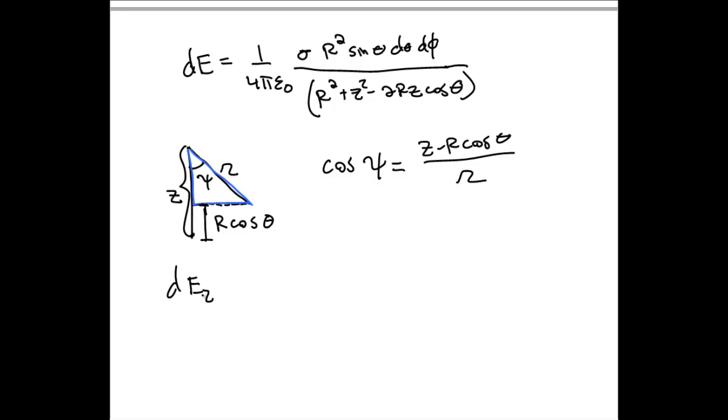Thus, the little bit of electric field in the z direction is the projection of the total electric field along the z-axis. So it's dE cosine of psi. Or writing that out, we have the expression.